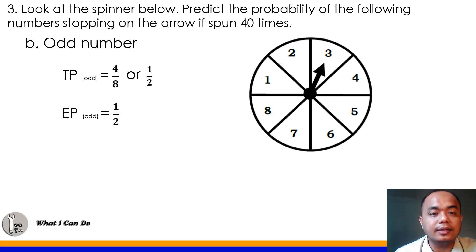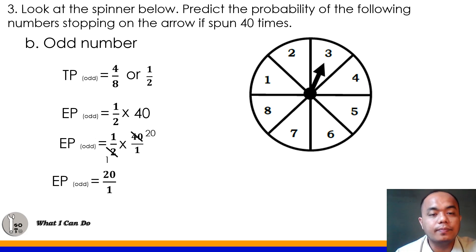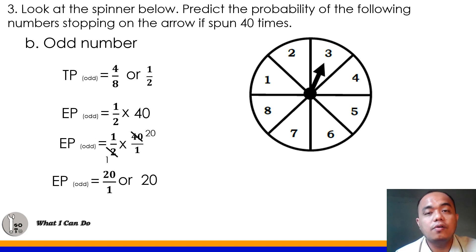We multiply 1/2 by 40 times. Convert 40 to a fraction (40 over 1). Using cancellation, 2 divided by 2 is 1 and 40 divided by 2 is 20. Then 1 times 20 is 20, over 1 times 1 is 1. So we can expect the spinner to land on an odd number 20 times when spun 40 times.